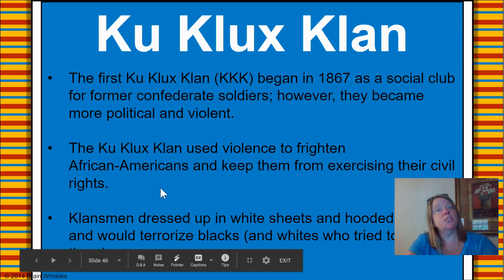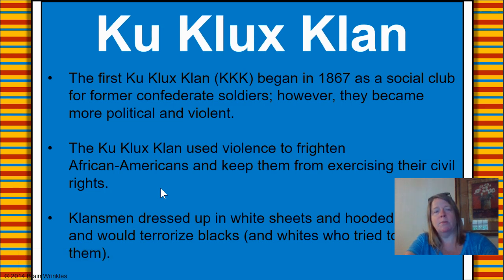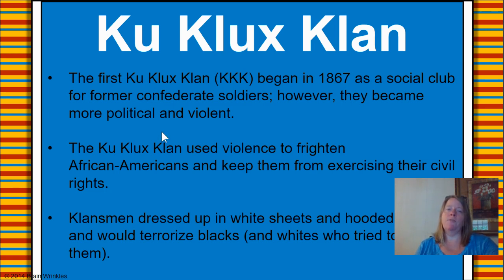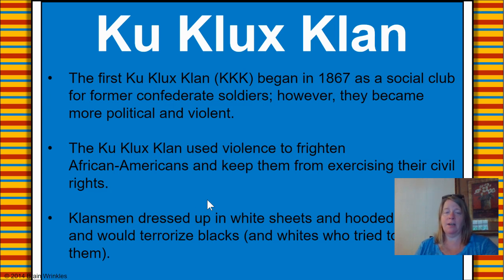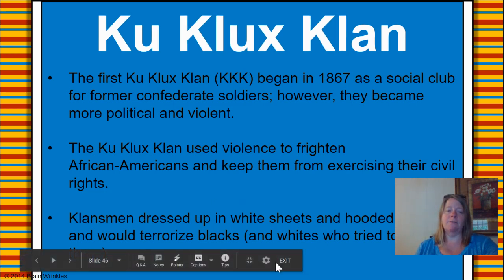The last thing we're going to discuss briefly — and the BrainPop video will go into more detail — is that a facet of the white community formed a group called the Ku Klux Klan at this time. This was a social club for former Confederate soldiers; however, they became more political and violent. Their violence was because they were frightened of African Americans gaining power, and they were trying to frighten African Americans and keep them from exercising their civil rights.